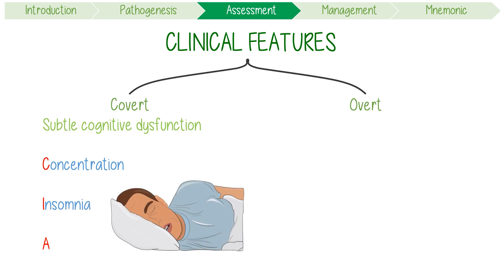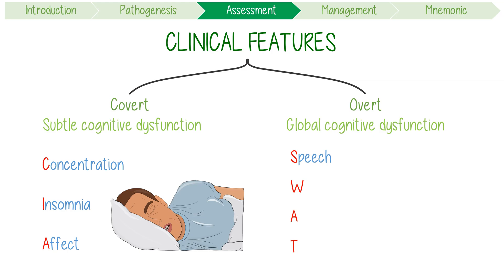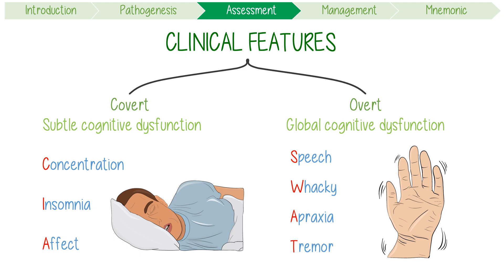Overt hepatic encephalopathy is characterised by reproducible physical signs consistent with more global cognitive dysfunction — think of something more conspicuous like the SWAT team. Monotonous slow speech, wacky behaviour like those seen in delirium, constructional apraxia (an inability to draw objects like a five-pointed star), and finally a flapping hepatic tremor, also known as asterixis.